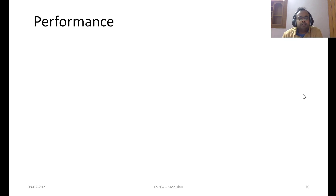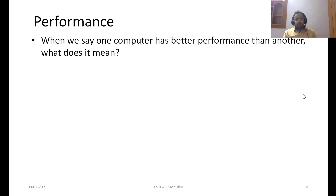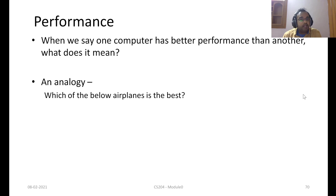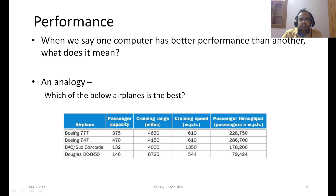Now looking at the term performance — when we say that a computer has better performance than another, what do we really mean? Is it only the speed or something else? Let's look at an analogy. The analogy I have picked is different types of aeroplanes. Here is a table which has four different aeroplanes: Boeing 777, Boeing 747, Concorde, and DC-850.